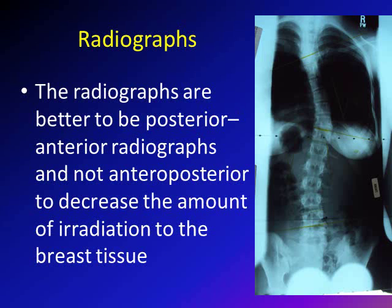Let's discuss the radiographs in general for scoliosis. We're going to concentrate on adolescent idiopathic scoliosis, which is mainly a disease of females — it's much more common in females than males. When you're suspecting adolescent idiopathic scoliosis, please order x-rays as posterior-anterior, not anterior-posterior, because these girls will be exposed to radiation many times during their growth. It's better to save the breast tissue from excess irradiation by having x-rays penetrate from posterior to anterior.